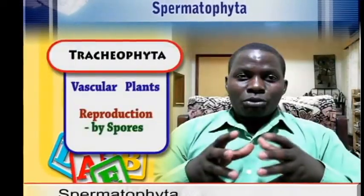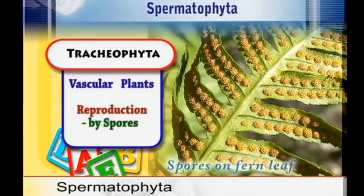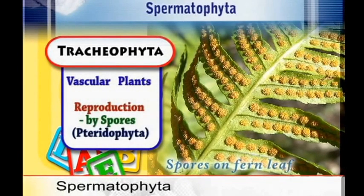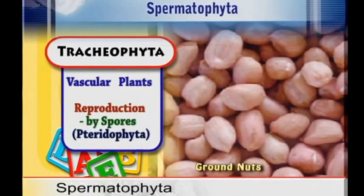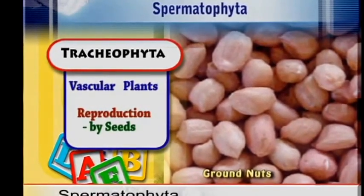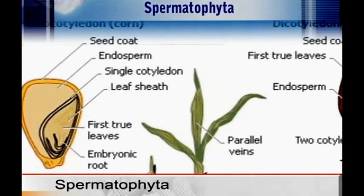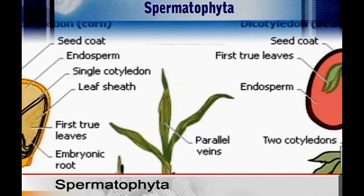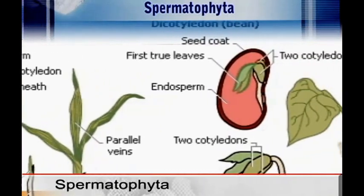The first group reproduces itself by means of spores, which we refer to as the Pteridophytes. And then the second group reproduces itself by means of seeds, which we are referring to as the Spermatophytes. Now we want to look at the Spermatophytes.